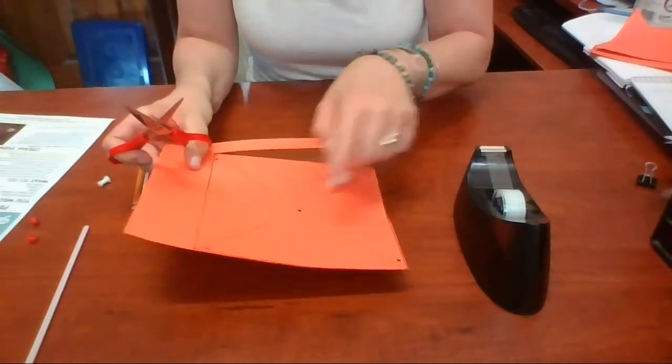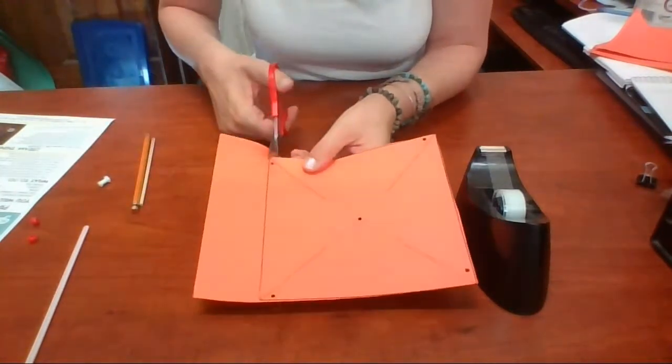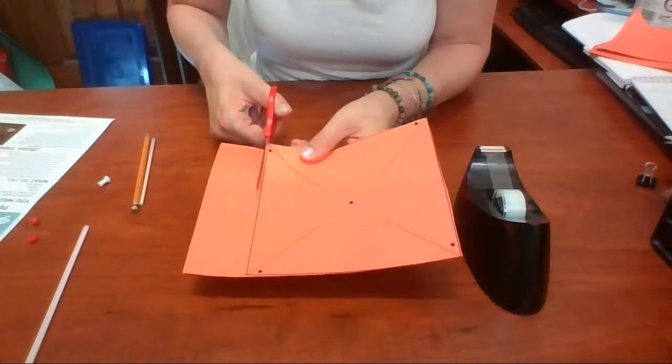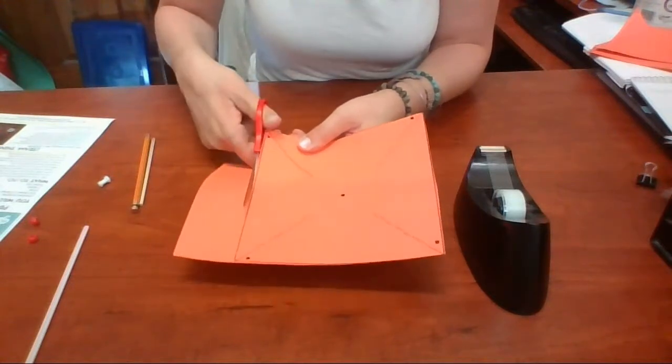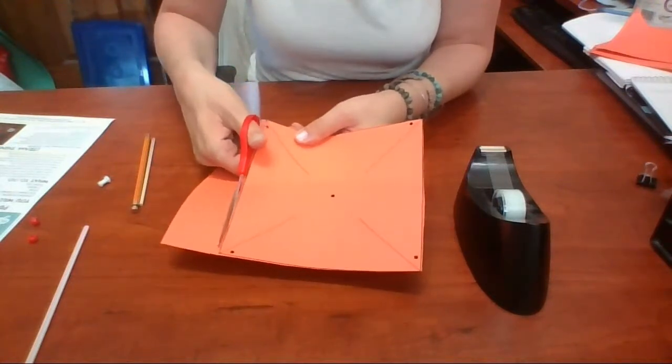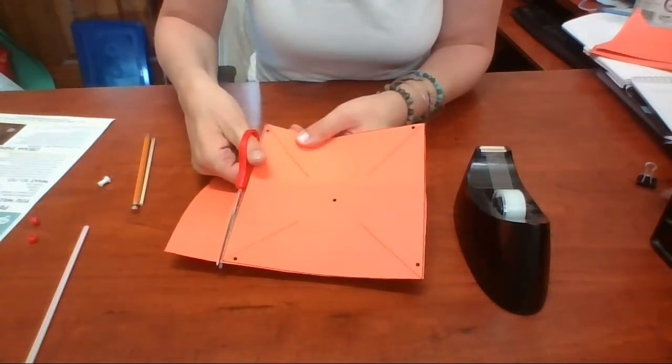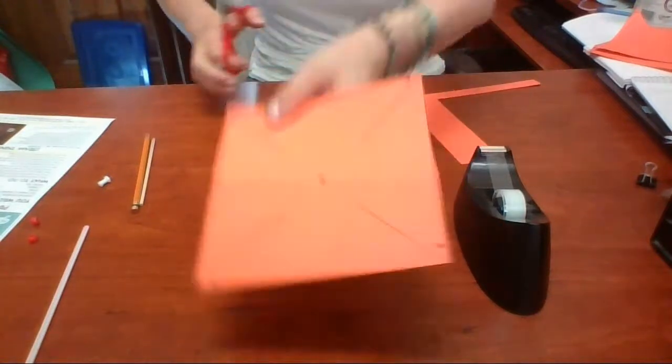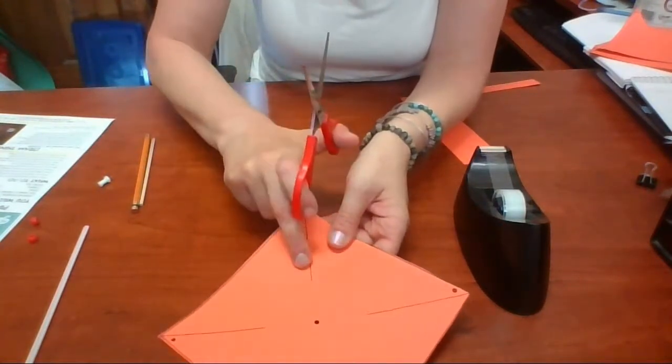Okay so I have poked nice holes in the five dots that were marked on the template and now I'm just finishing cutting up the outside square lines that were on the template. So I've got a nice square here.